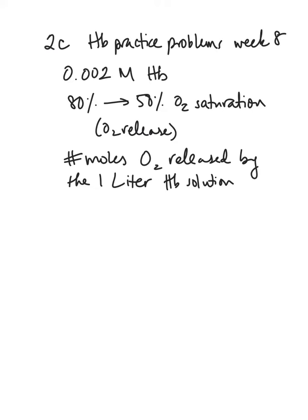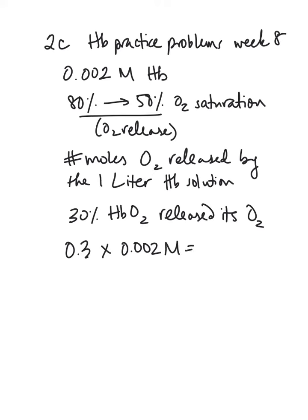If you went from 80% saturated to 50% saturated, that means 30% of the hemoglobin released its oxygen. So 30% of the total, and the total is 0.002 molar, is 0.0006 molar. So that much of the hemoglobin released its oxygen.